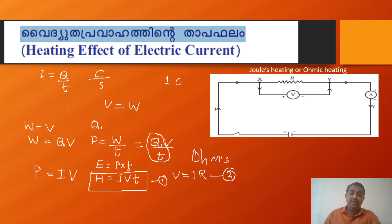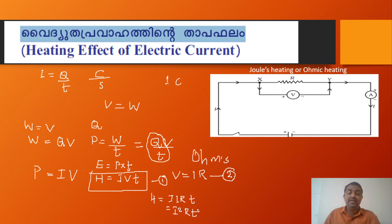We will substitute: H is equal to I·V·t. We substitute V with I·R. So h is equal to I into I·R into t, which is equal to I squared R·t. This equation is the answer: H is equal to I² R t.